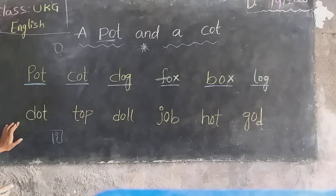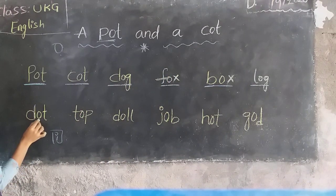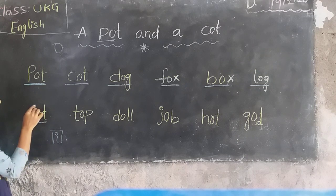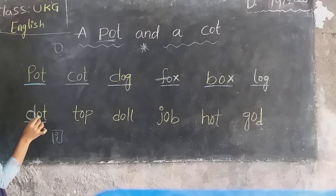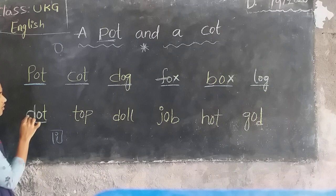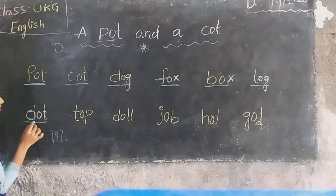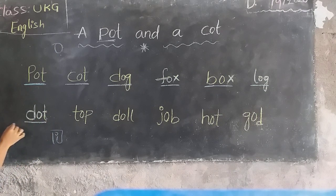Next word. D-O-T, dot. Here, the sound of D is Da. O sound, O. Next, T sound, Ta. D-O-T, dot.